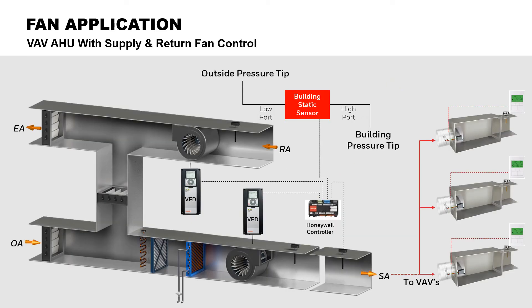One of the most common uses of a VFD is in air handling units and variable air volume boxes, or VAV boxes. In this example, there is an air handling unit with a supply and return fan. Both fans are modulated by a VFD. The air handling unit and the VAV boxes each have a DDC controller. The AHU controller commands the VFDs to the desired fan speed. For the supply fan, the VFD maintains a duct static pressure set point established by the test and balance contractor.